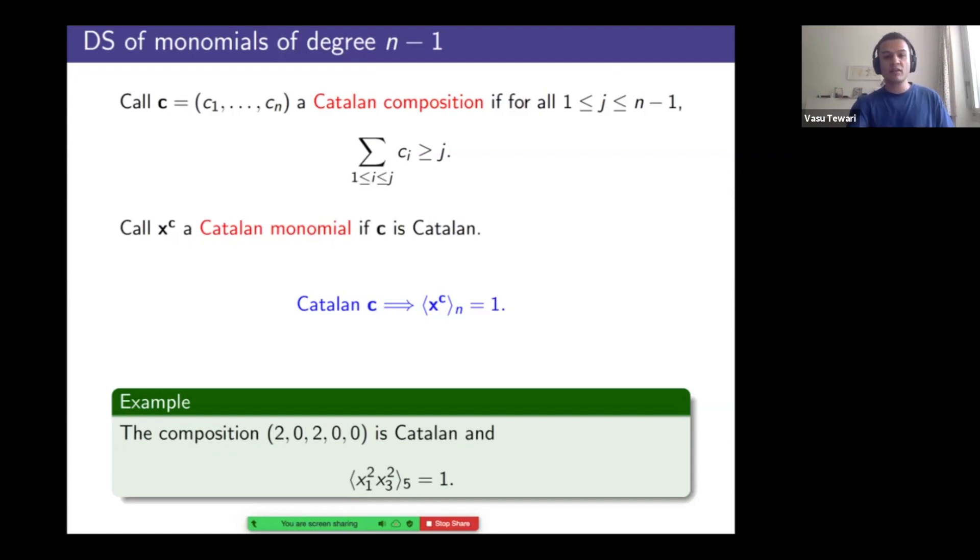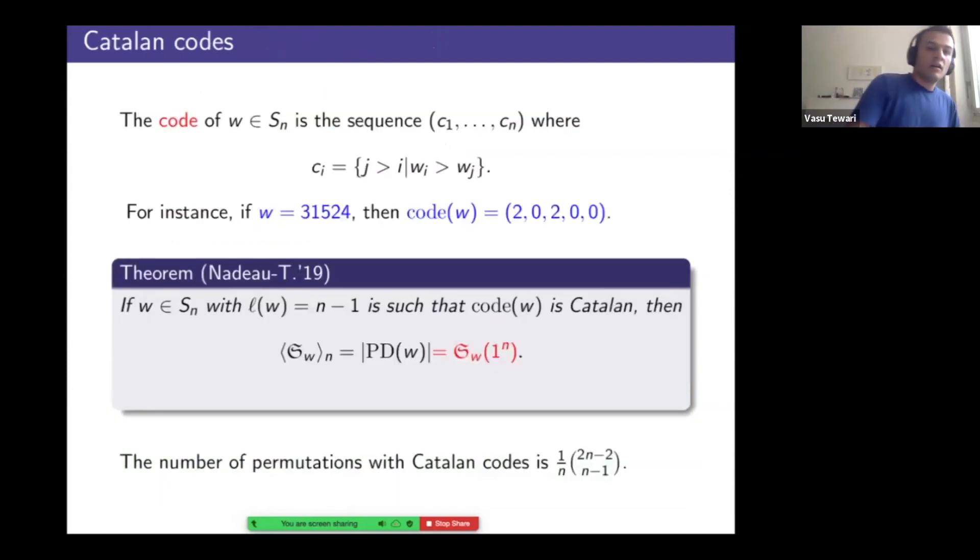So neat fact: Catalan monomials get you one upon divided symmetrization. And this is nearly an if and only if statement. So for instance, here's a Catalan composition, 2, 0, 2, 0, 0. And the attached monomial, x1 squared, x3 squared. When you divide it symmetrize over S5, you get exactly one.